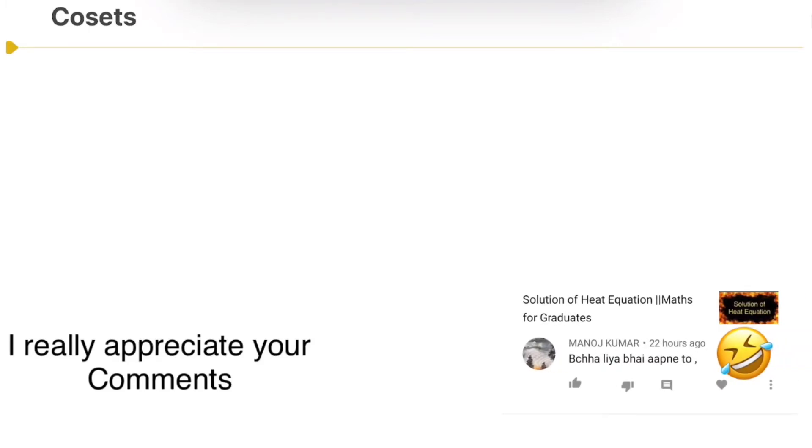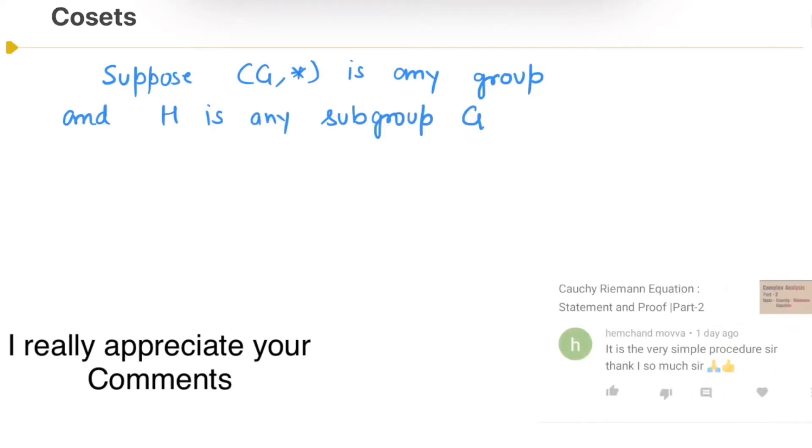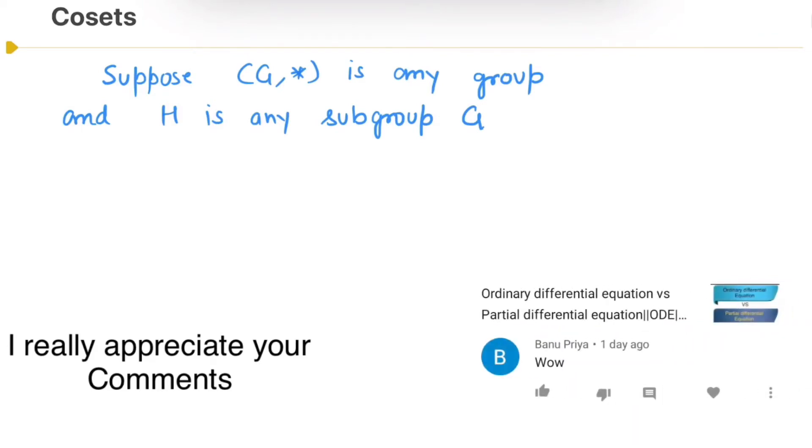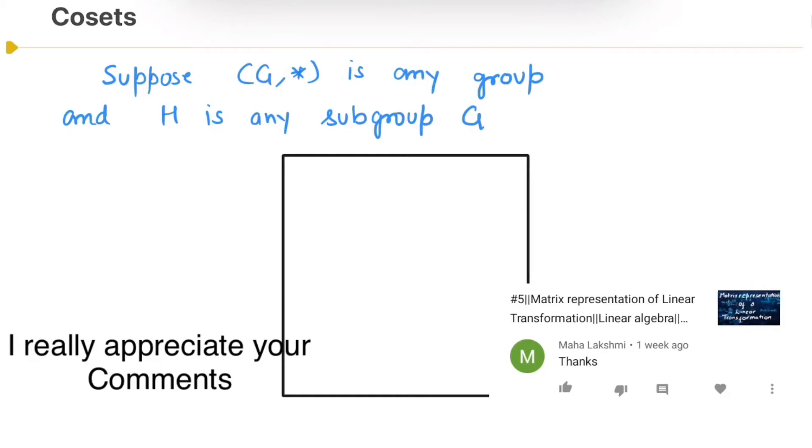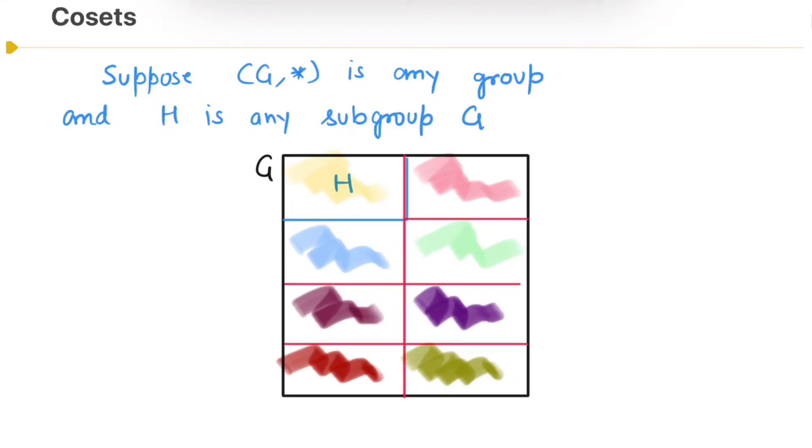Suppose G star is any group and H is any subgroup of G. Then, with the help of H, you can break group G into number of pieces. Suppose this is group G and this is subgroup H. Now, I'm going to divide this group G into number of pieces. All the rectangular blocks are of same size. These pieces are called cosets of H. I hope you got the idea about cosets and their importance. Now, let's come to the formal definition of coset.